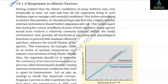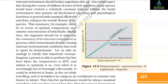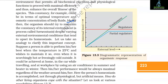One would expect that during the course of millions of years of existence, many species would have evolved a relatively constant internal environment that permits all biochemical reactions and physiological functions to proceed with maximal efficiency, thus enhancing the overall fitness of the species. This constancy, for example, could be in terms of optimal temperature and osmotic concentration of body fluids. Ideally, the organism should try to maintain the constancy of its internal environment — that process is called homeostasis.